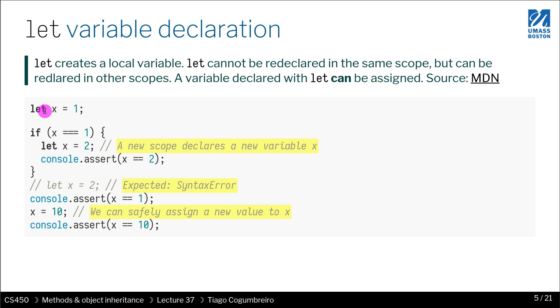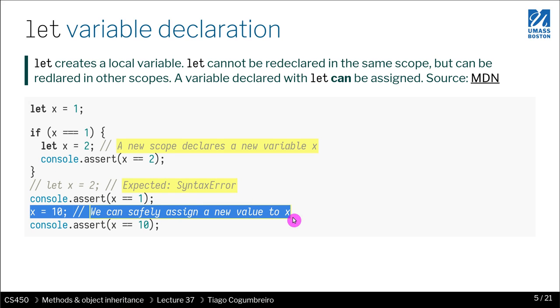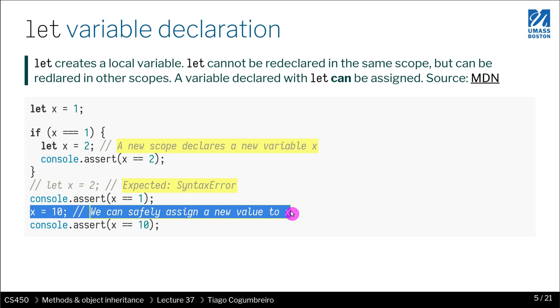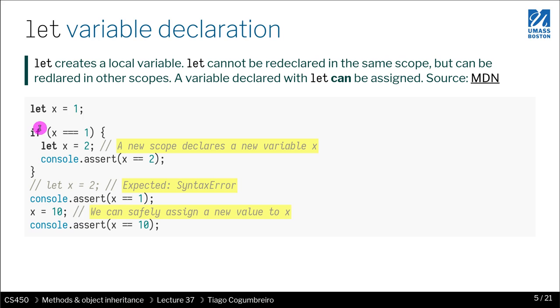So we declare a variable by saying let, but we can assign it. So here it is, we are assigning. So we can define let x, and now we can assign it with x equals 10. You would get an error if you define another let here, because you already declared x in that scope.